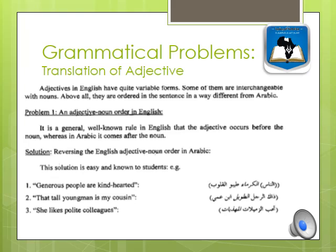We continue with problem number 12, listed on page 58: translation of adjectives. First of all, you are familiar with what adjectives are — they describe nouns. Adjectives in English have quite variable forms; some are interchangeable with nouns. Above all, they are ordered differently from Arabic, because adjectives in English precede nouns.